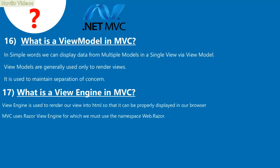Question 16: What is a view model in MVC? A view model allows displaying data from multiple models in a single view. View models are generally used only to render views and are used to maintain separation of concern.